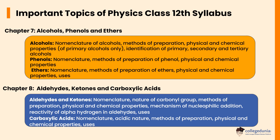In Chapter 8, Aldehydes, Ketones, and Carboxylic Acid, important topics are nature of carbonyl group, methods of preparation, physical and chemical properties, mechanism of nucleophilic addition, reactivity of alpha hydrogen in aldehydes, and uses. For carboxylic acids: nomenclature, acidic nature, methods of preparation, physical and chemical properties, and uses.